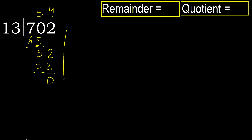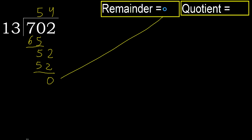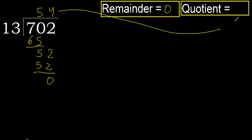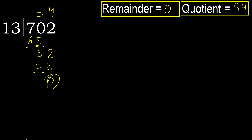That is no remainder, therefore finish. Therefore 702 divided by 13 is 54.